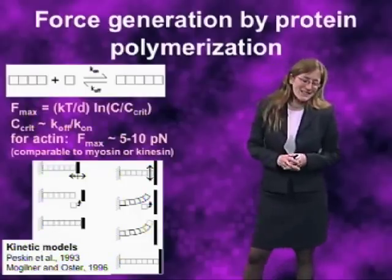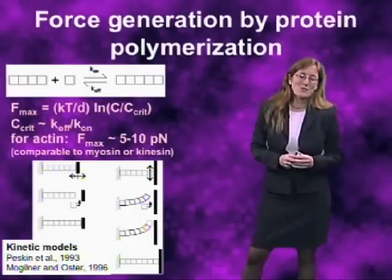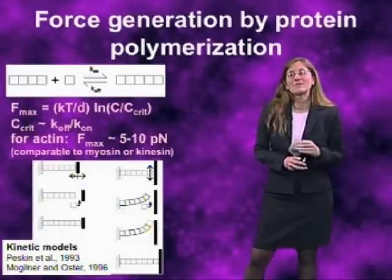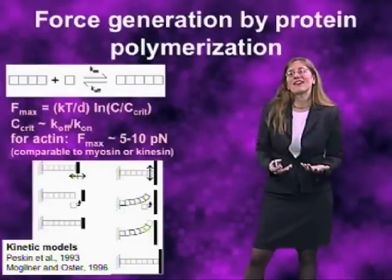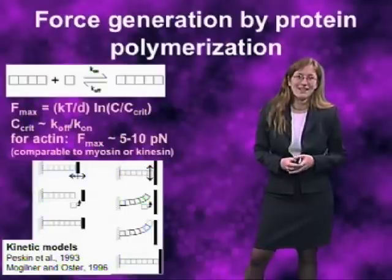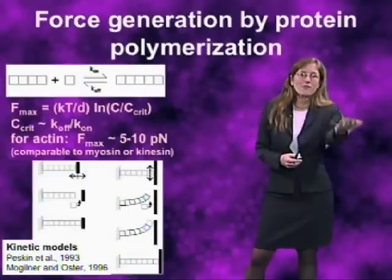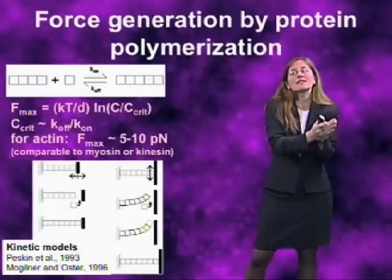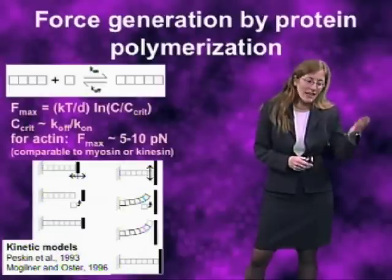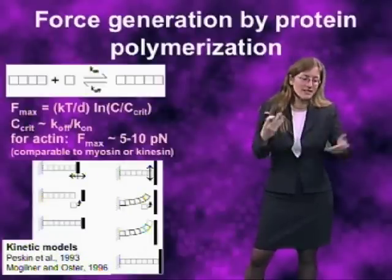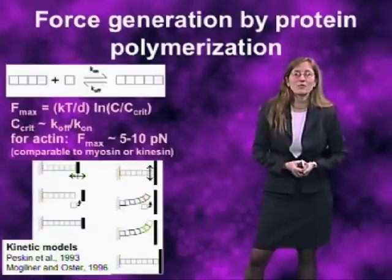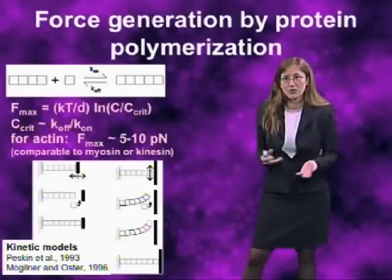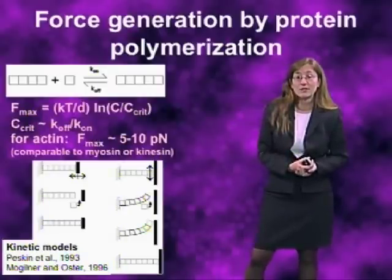In biological systems, it's very useful to find a particular individual organism that specializes in the process that you want to study, and then figure out how it has optimized its utilization of that process. Because so many things are conserved through evolution, you can look and see how that process is similar throughout other organisms you're also interested in.